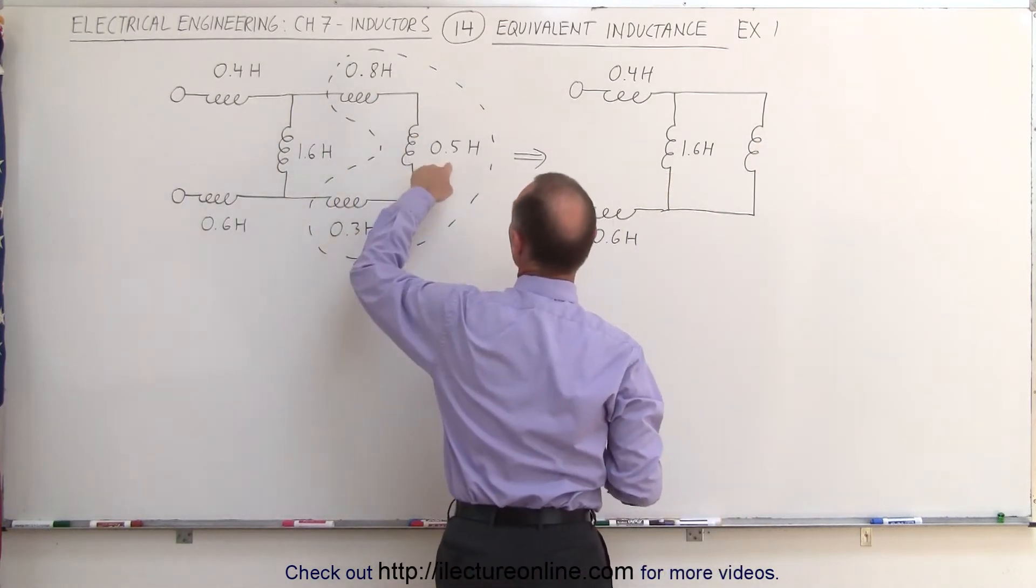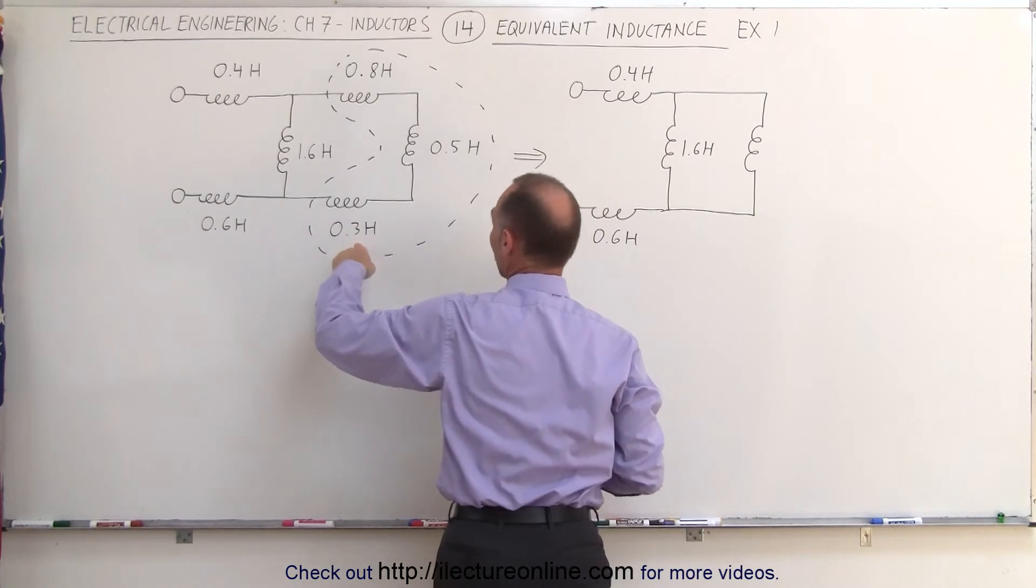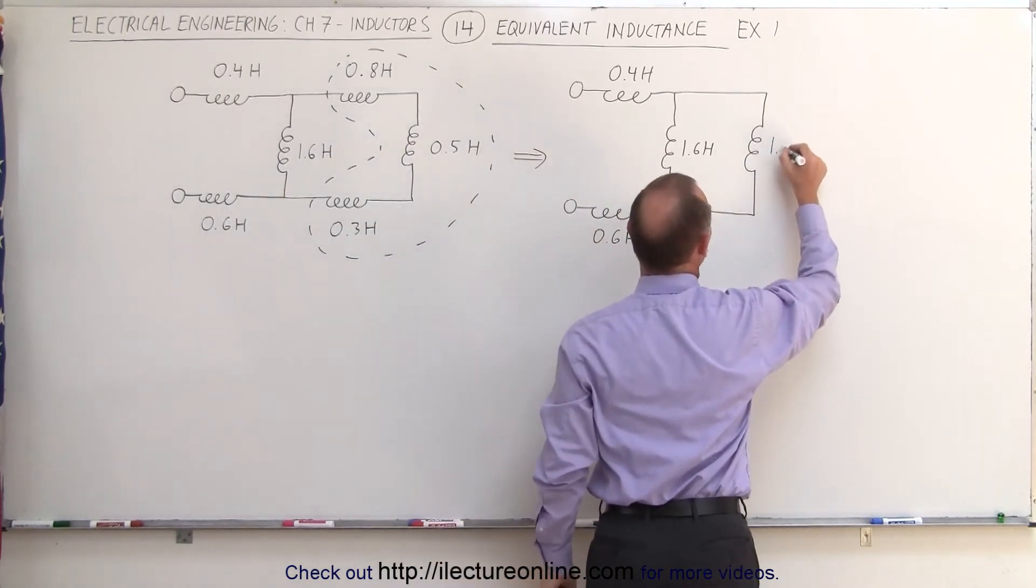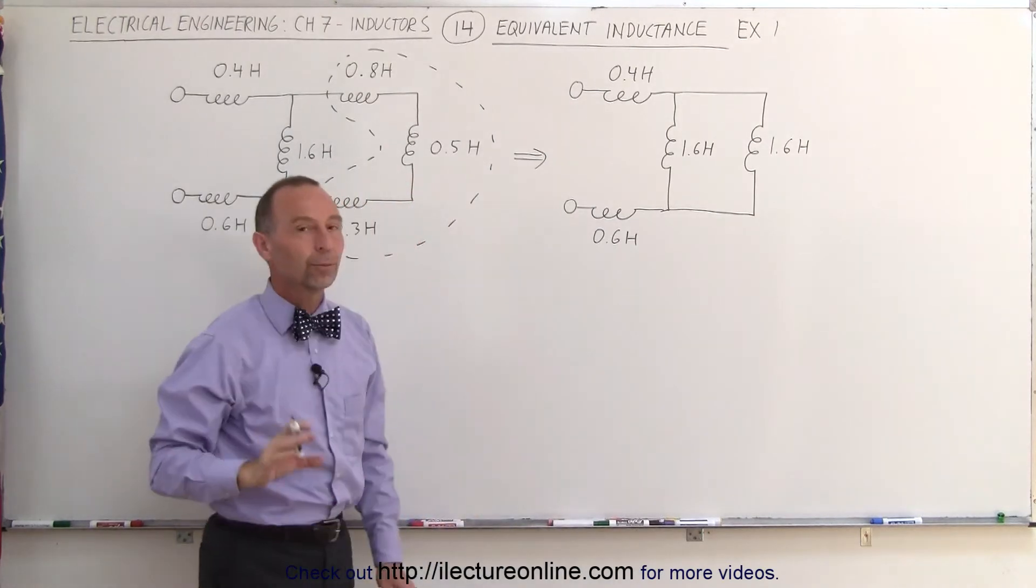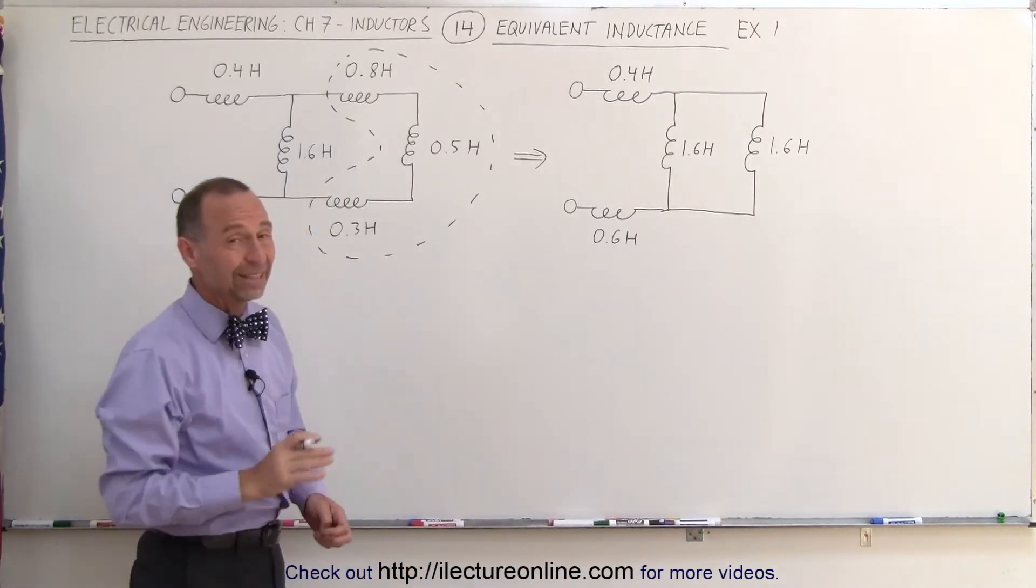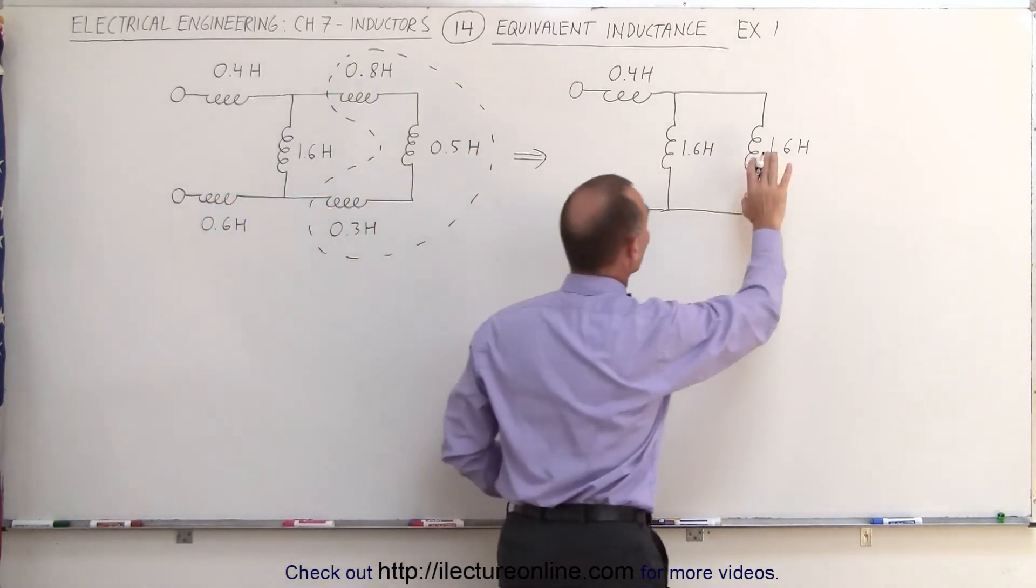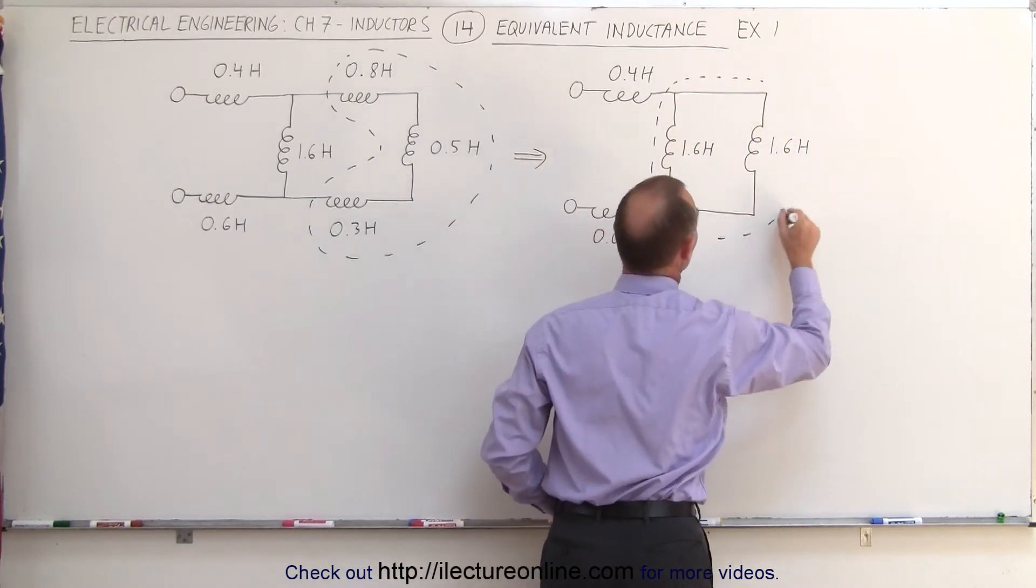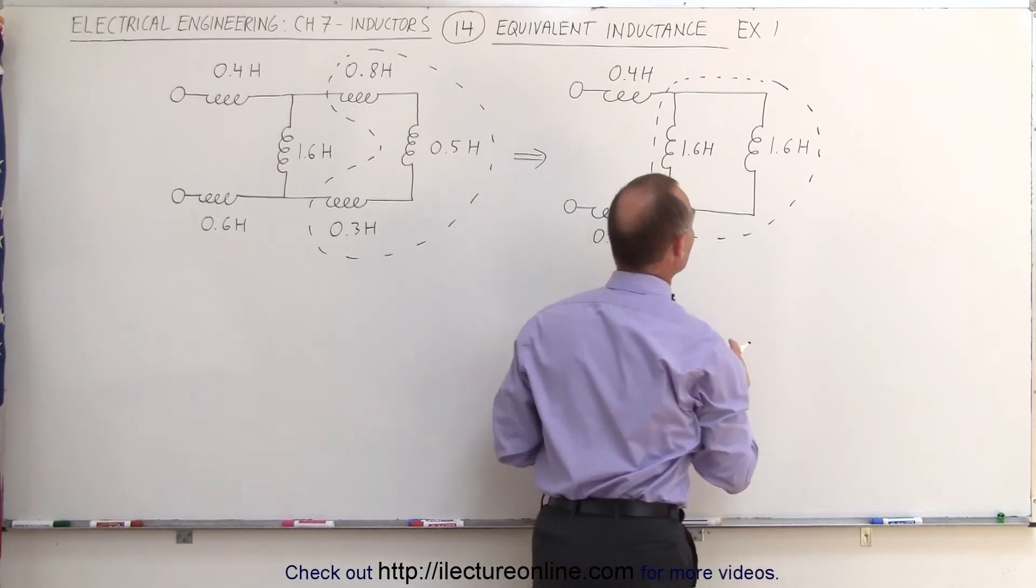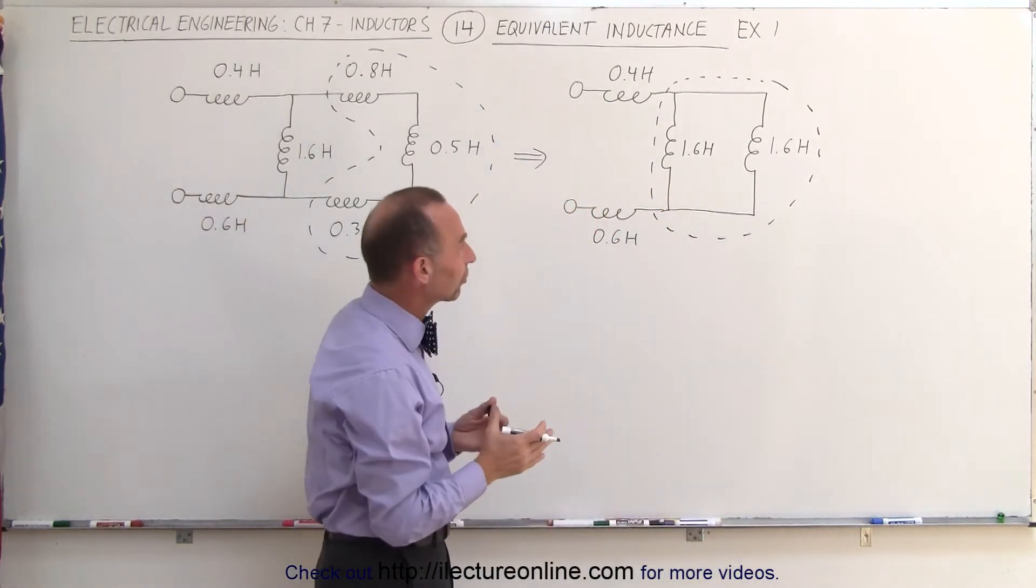When we add them together, 0.8 plus 0.5 is 1.3, plus 0.3 is 1.6 Henrys. So that's the equivalent circuit, reduced to some extent. We're going to continue the process. We take the outermost part of the circuit. Here we see that these two branches are in parallel to one another, which means we can replace them by a single inductor.